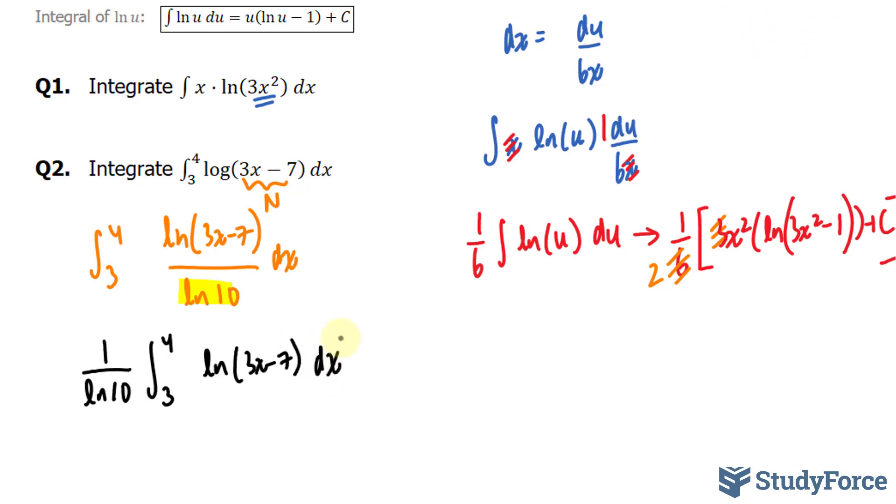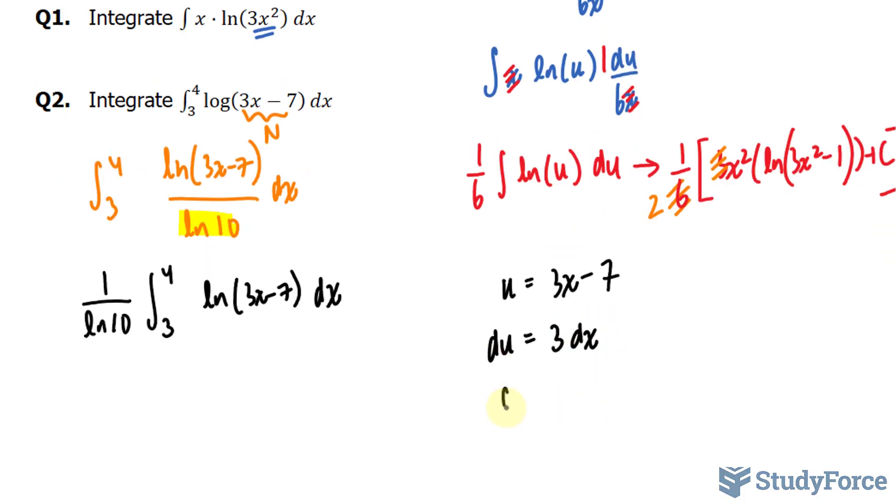I'll pull out ln 10 outside of the integral, where I have 1 over ln 10 times the integral between 3 and 4, ln 3x minus 7 dx. I'll do a u substitution just as before. u is equal to 3x minus 7. This gives me du is equal to 3 dx. This becomes 0 and this becomes, as you can tell, 3. Therefore, dx is equal to du over 3.